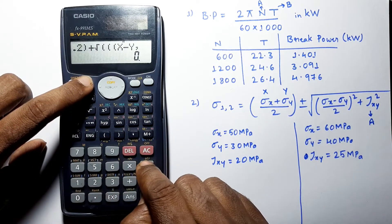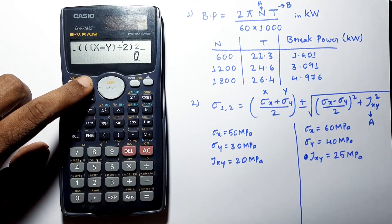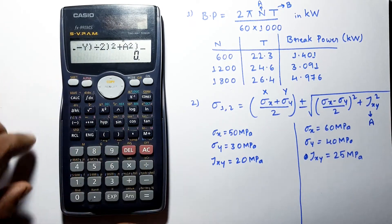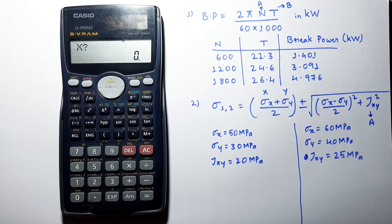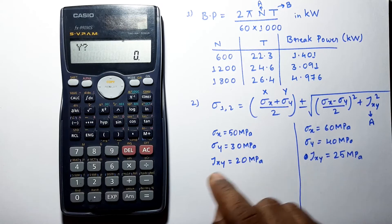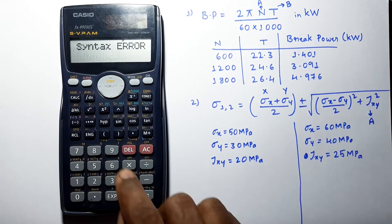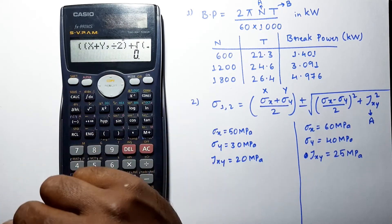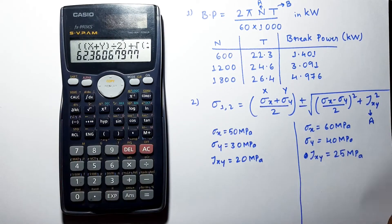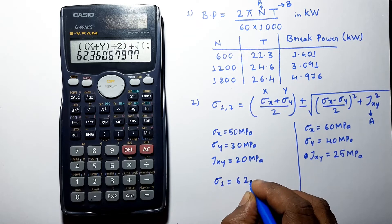Now let's program this formula: open two brackets, X plus Y divided by 2, then root over — open three brackets — X minus Y, we have a square term here, plus A squared. Close the bracket and press calculate. It is asking for stress values. Enter sigma x as 50, sigma y as 30, and tau xy as 20. We noticed a missing bracket — let's replace this with the correct bracket.